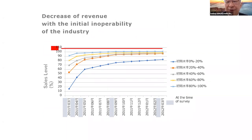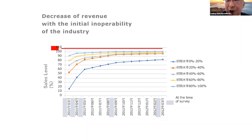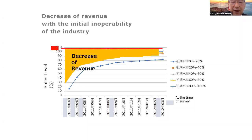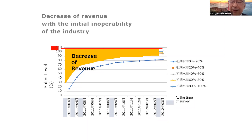You can see that the heavier the direct damage, the longer the recovery period. Even after one year from the disaster, full recovery could not be attained. This delay in recovery inevitably drives economic loss — the decrease in revenues can be summarized by the area colored in yellow.